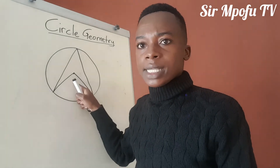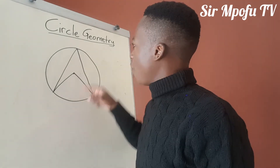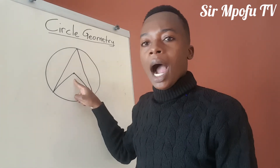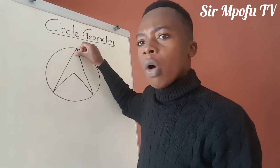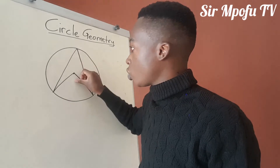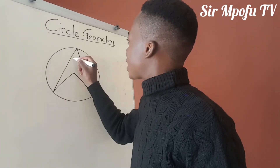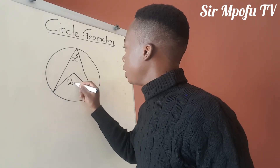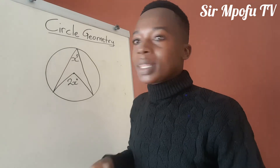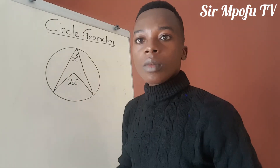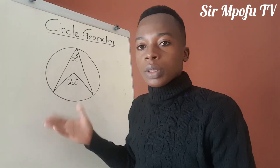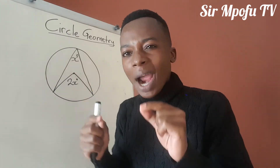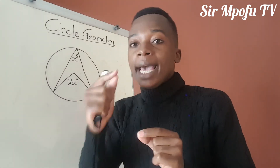If you have 25 at the circumference, the angle at the center is going to be 50. If you have 3 at the circumference, the center angle is going to be 6. If you are given an angle at the circumference, you multiply it by 2 to get the angle at the center. So if you have x degrees at the circumference, the center angle is 2x degrees. The angle subtended by an arc at the center is twice the angle subtended by that same arc at the circumference.